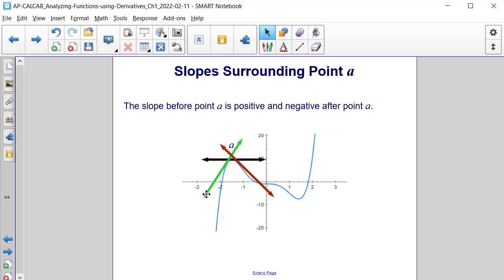Well, it turns out that the slope before A is positive in nature, and it's negative in nature after point A, where the slope is zero.